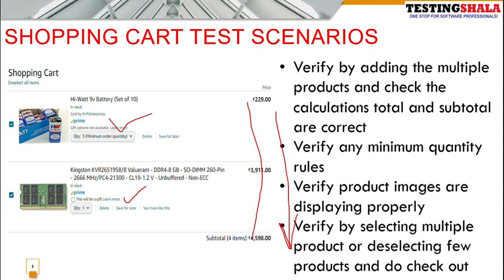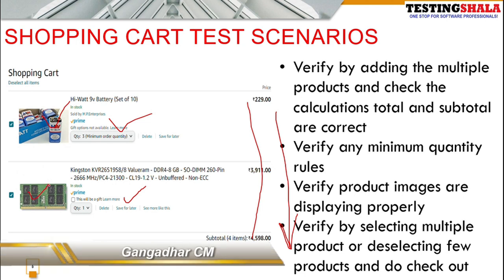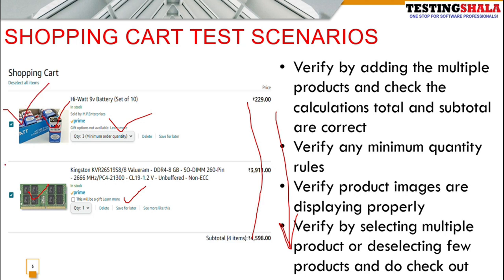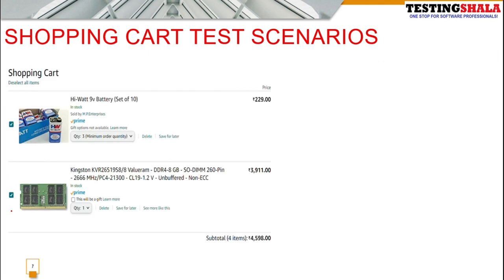You should also test product images — whether all images are visible properly, and whether clicking on an image navigates to the product page. There are also checkbox options; for example, if you have 10 products in the cart but only want to buy 5 immediately, you can select only those 5 and check out. You should test that the checkbox selection works correctly.